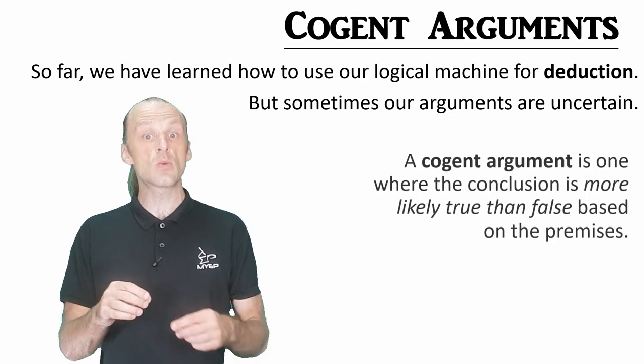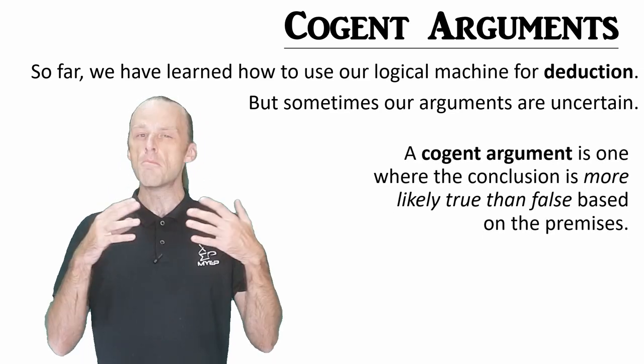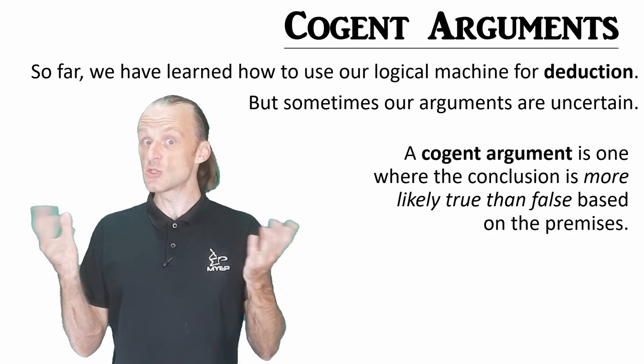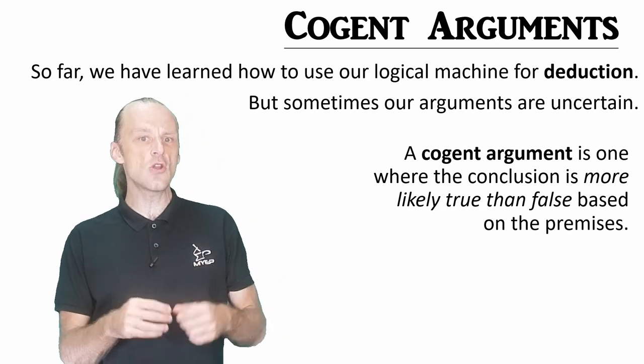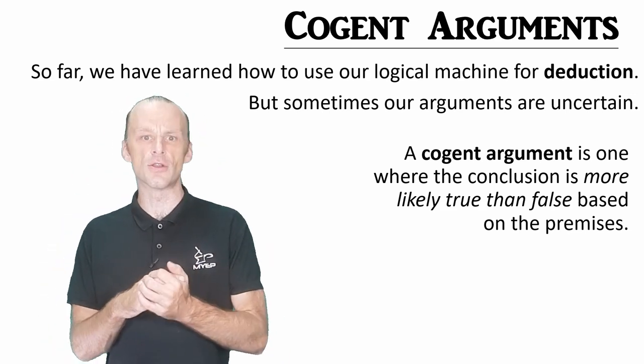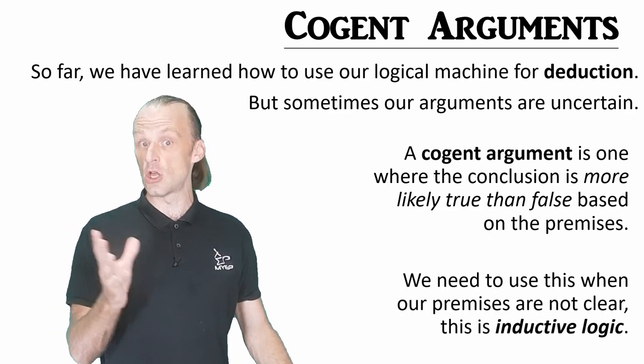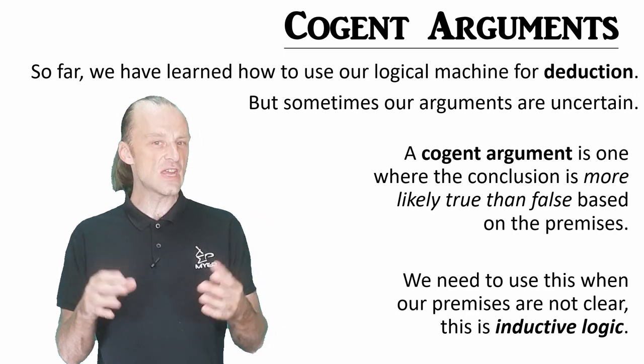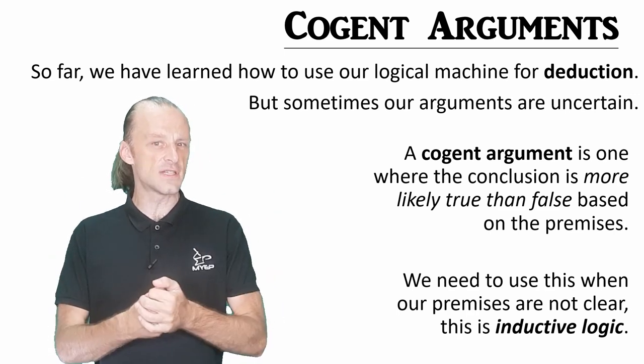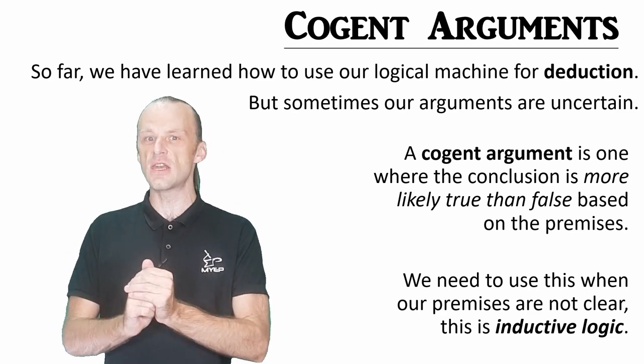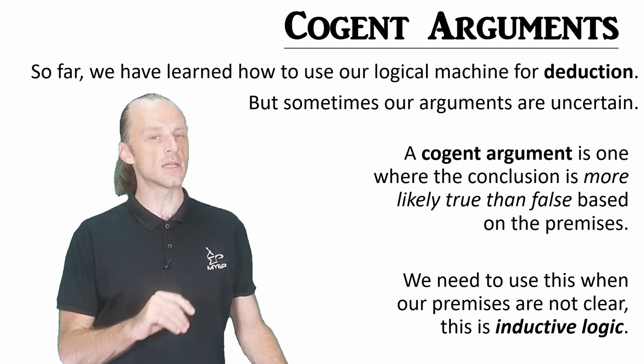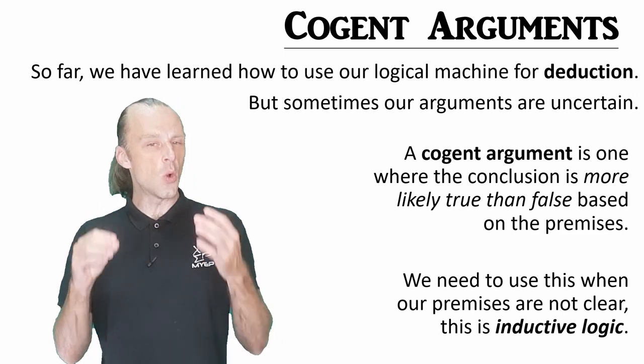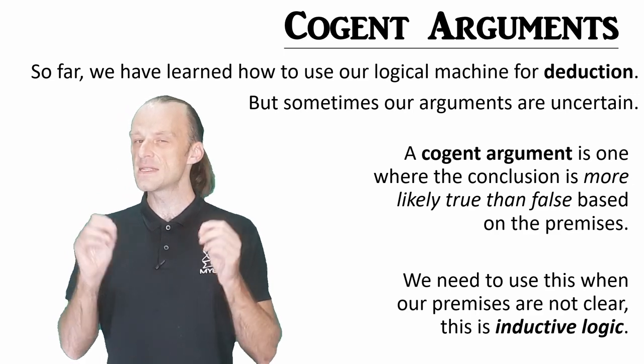But there is another kind of argument which uses premises that are not clear or cannot be confirmed. This is called induction. A cogent argument is one where we think the conclusion is most likely true based on the premises. What does most likely mean? It means that the premises cannot completely entail the conclusion, but there is some reason to believe the logical thread of the argument. This is inductive logic, and it's the first step towards something like fuzzy logic. We use the same logical machine, but the conclusions we come to have some uncertainty in them. This uncertainty means that inductive arguments will always be open to some skepticism.